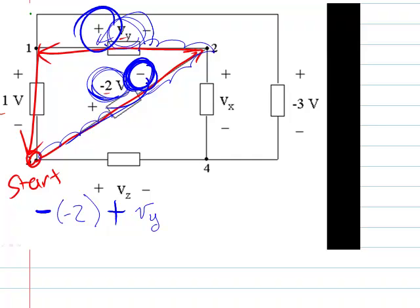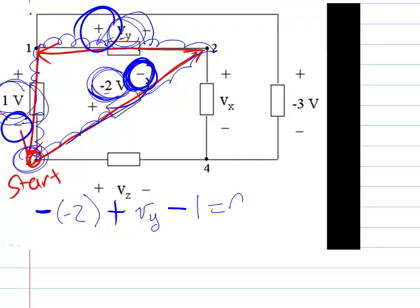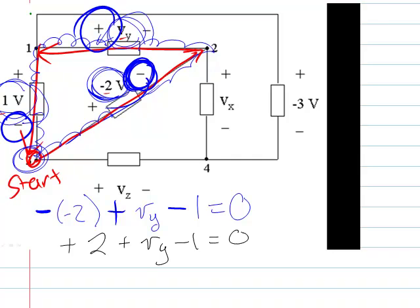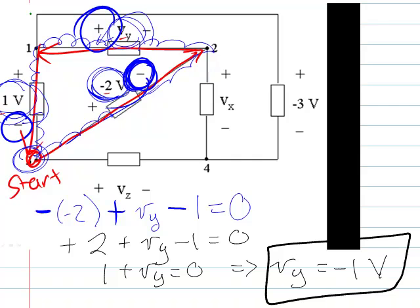We continue on our journey and get to another voltage, and since we land on a negative sign, that means it's a voltage drop from this perspective. So we minus off that one, and then we go back to the start point, meaning we're all done. We set it equal to zero. Now we can simplify: minus a negative 2 is plus 2, plus Vy minus 1 is equal to 0. So that gives us 1 plus Vy equals 0, or Vy is equal to negative 1 volts.